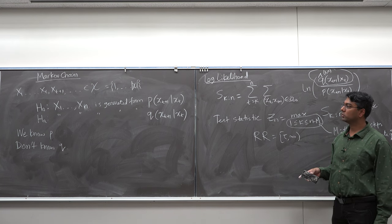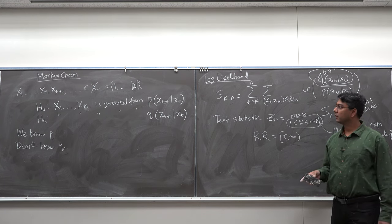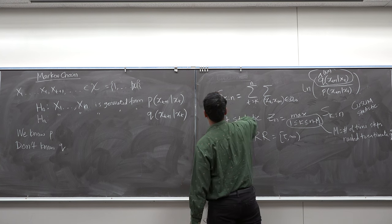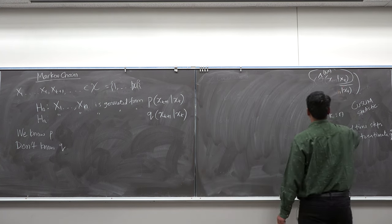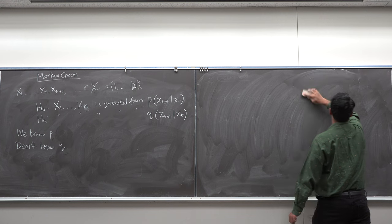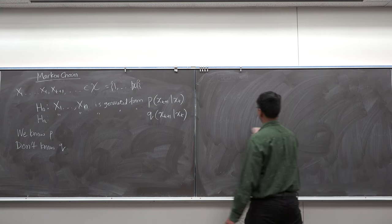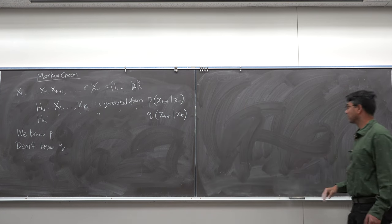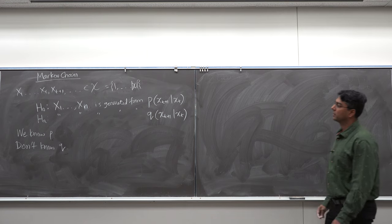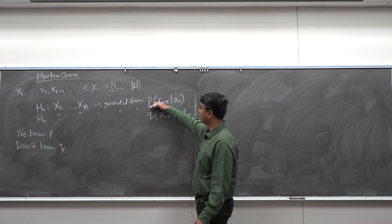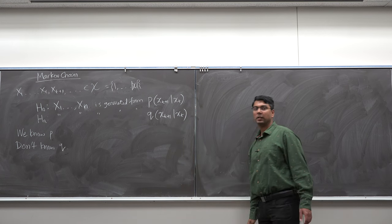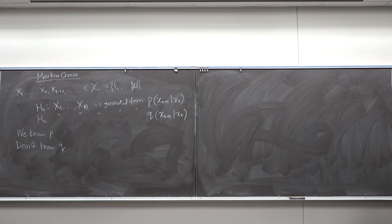The natural next problem: we do not know P and we do not know Q — we do not know the current model or what the future attacked model will look like. In the previous lecture we talked about kernel methods, where we did not need to know the pre-attack or post-attack probability distribution. We are going to extend the kernel method to this problem.